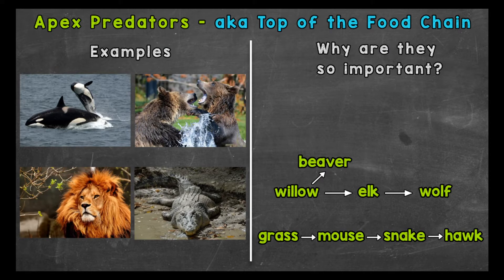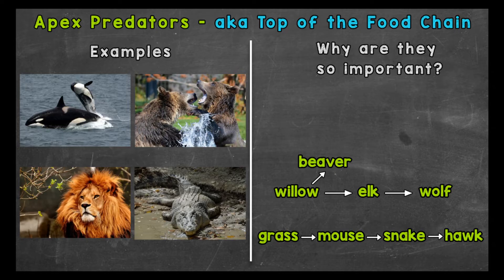Apex predators are predators that sit atop a food chain or food web. They have no natural predators when fully grown. Healthy apex predators mean a healthy ecosystem — they are key to that health. We're going to go through a few apex predator examples and talk about why they are so important.